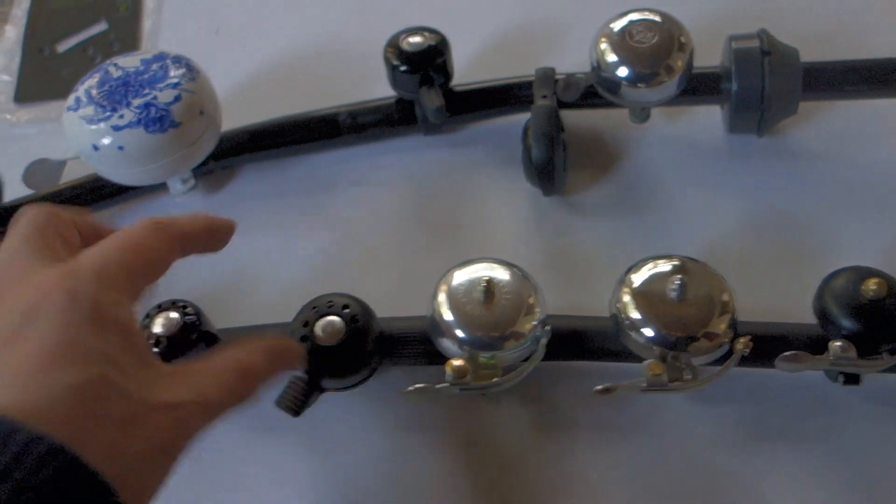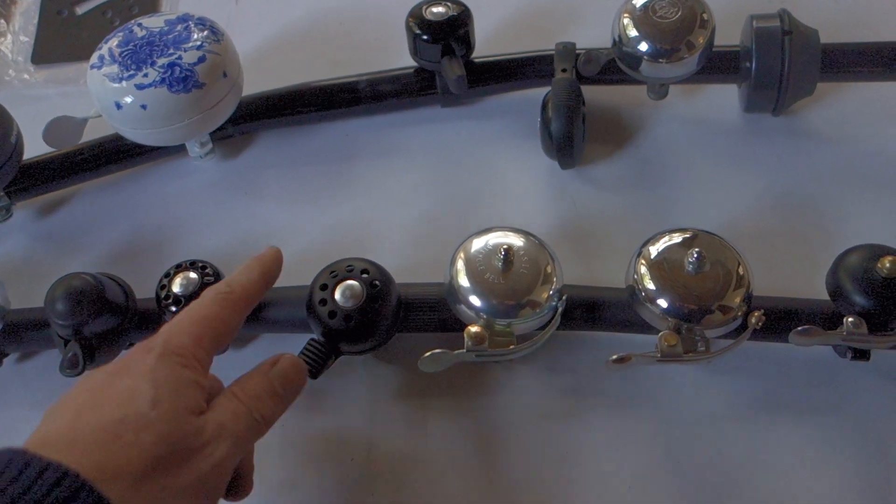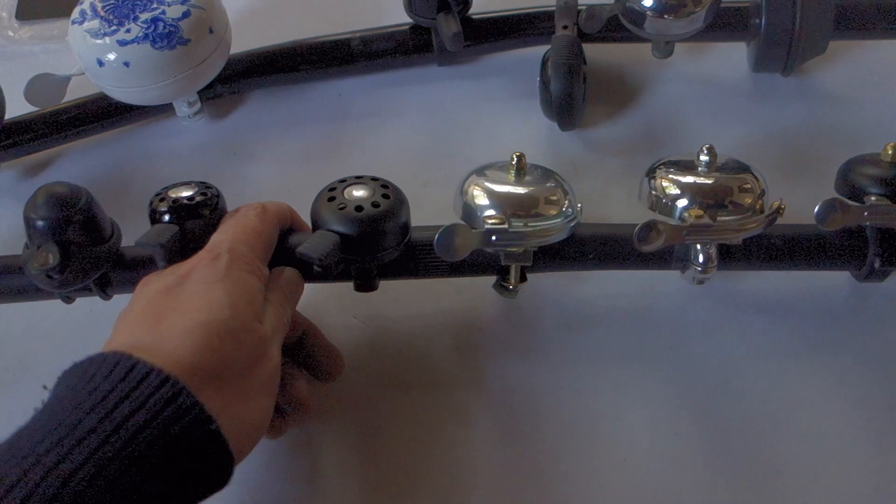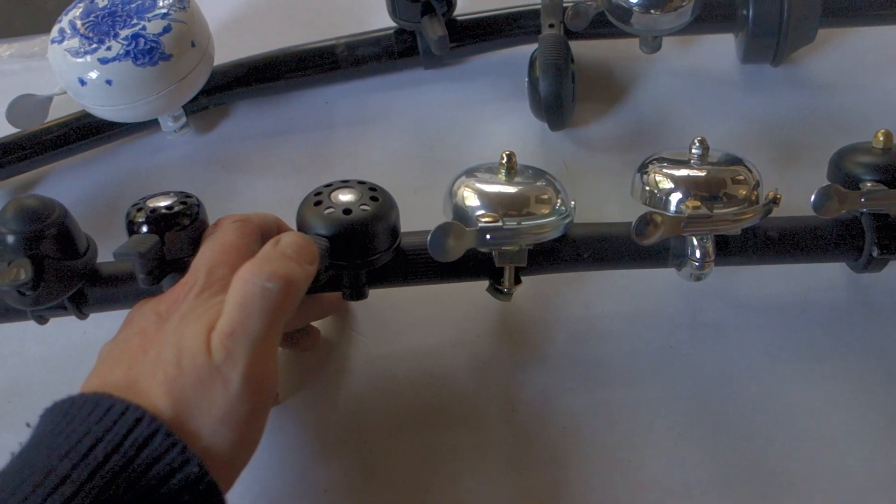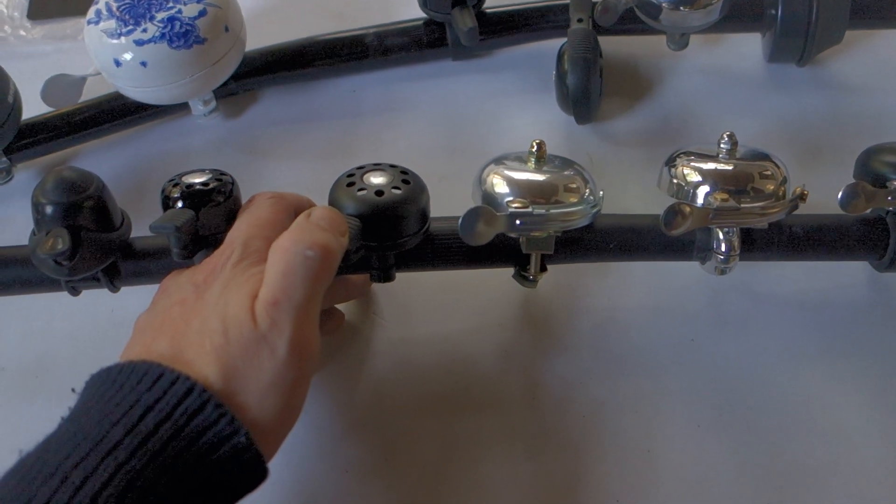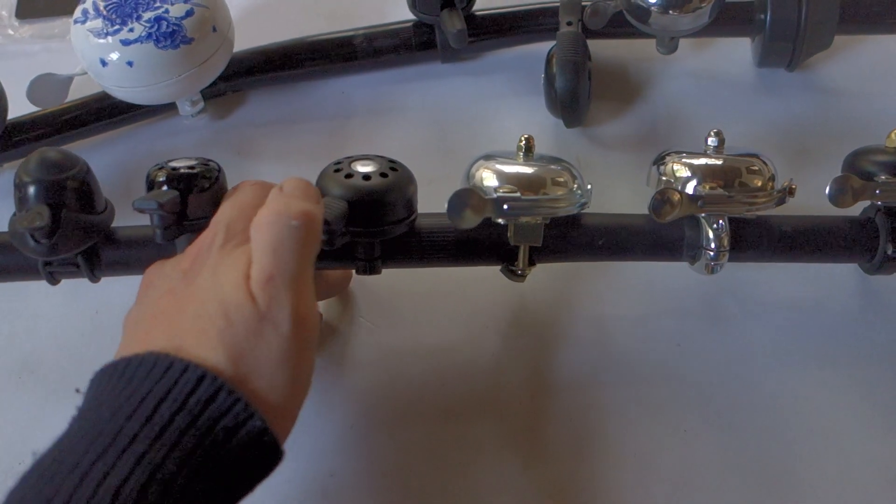Then we have the Charlie. It's a bigger version of this. Also by Mountie. I think it's a German brand. And you can hear that the resonance frequency is lower. And that's logical because the dome is bigger.